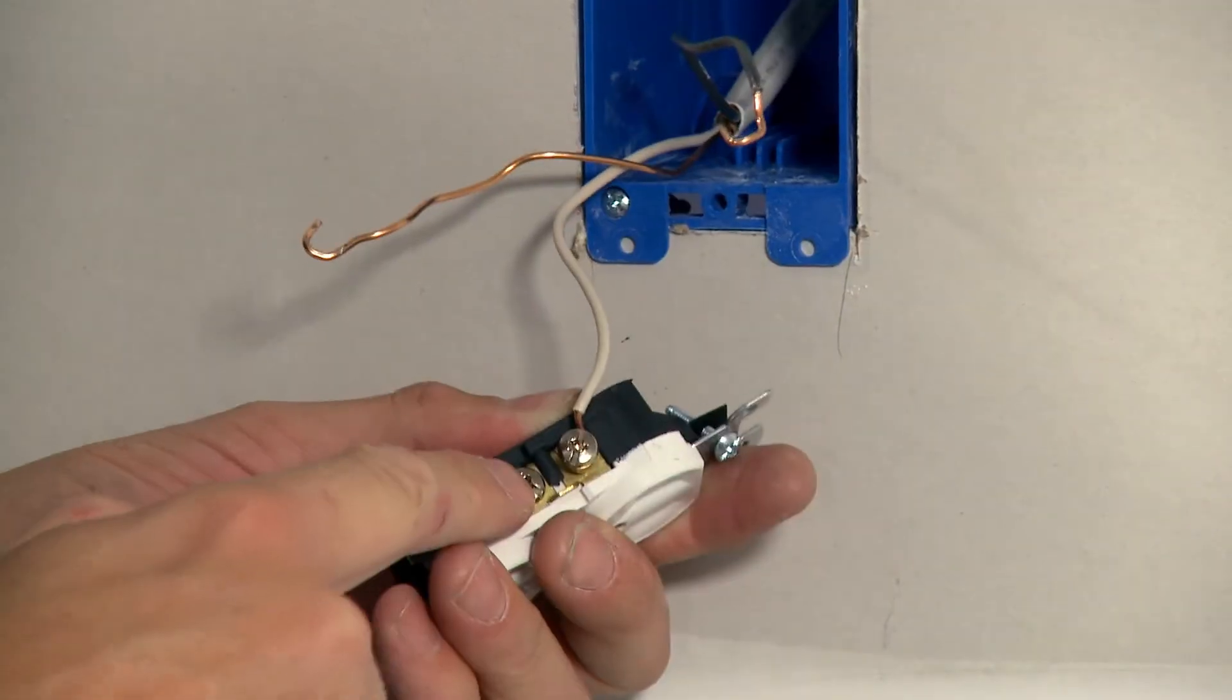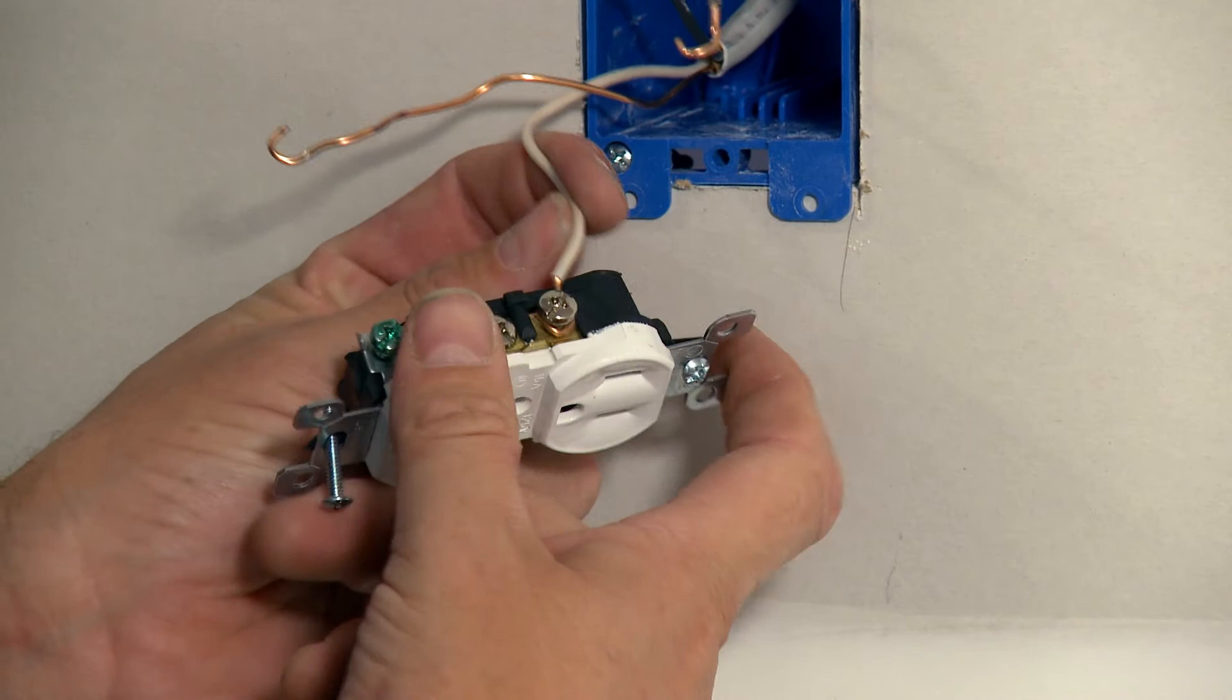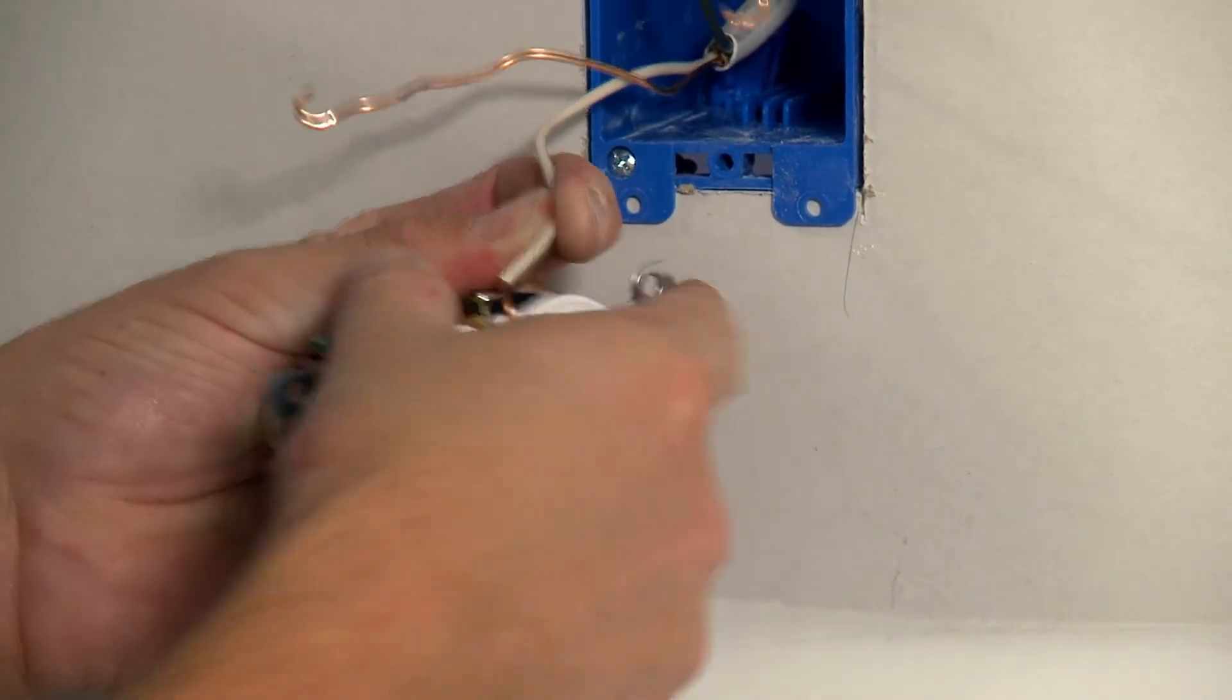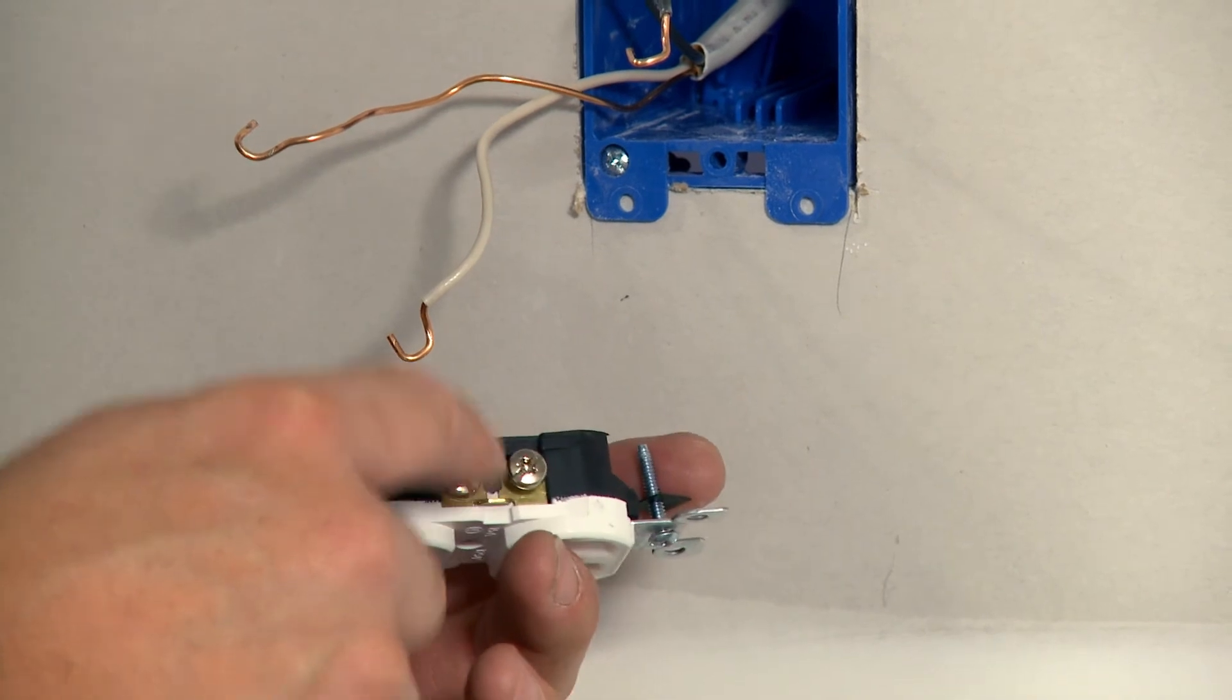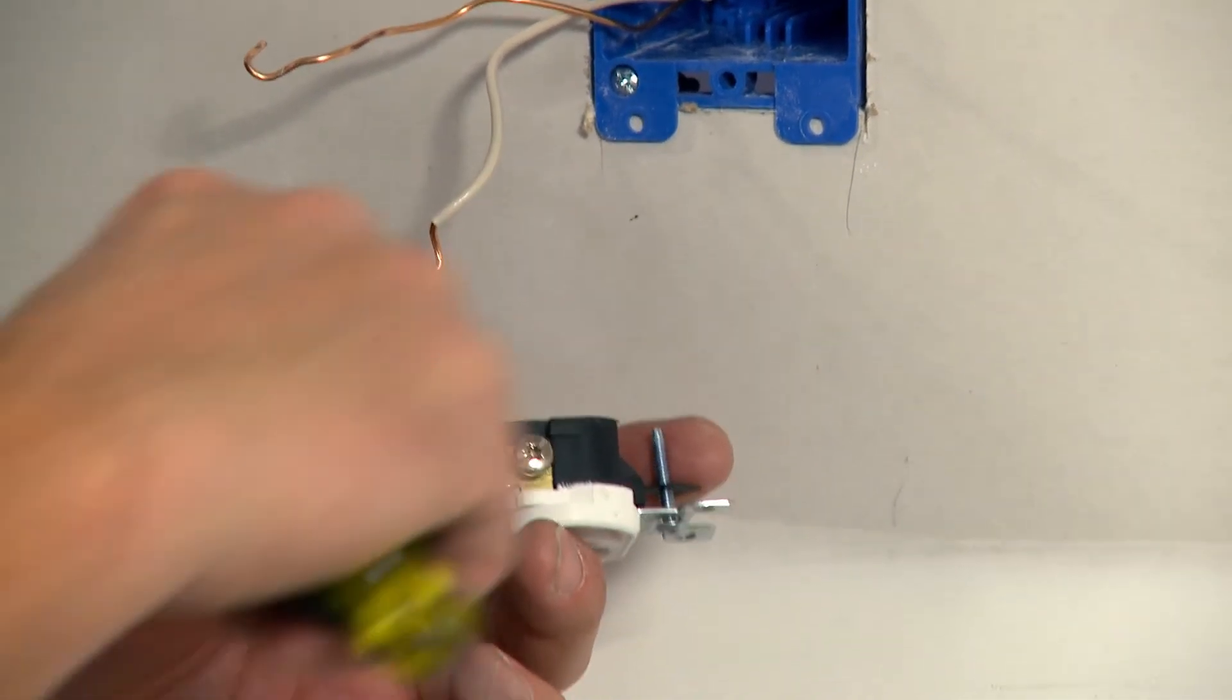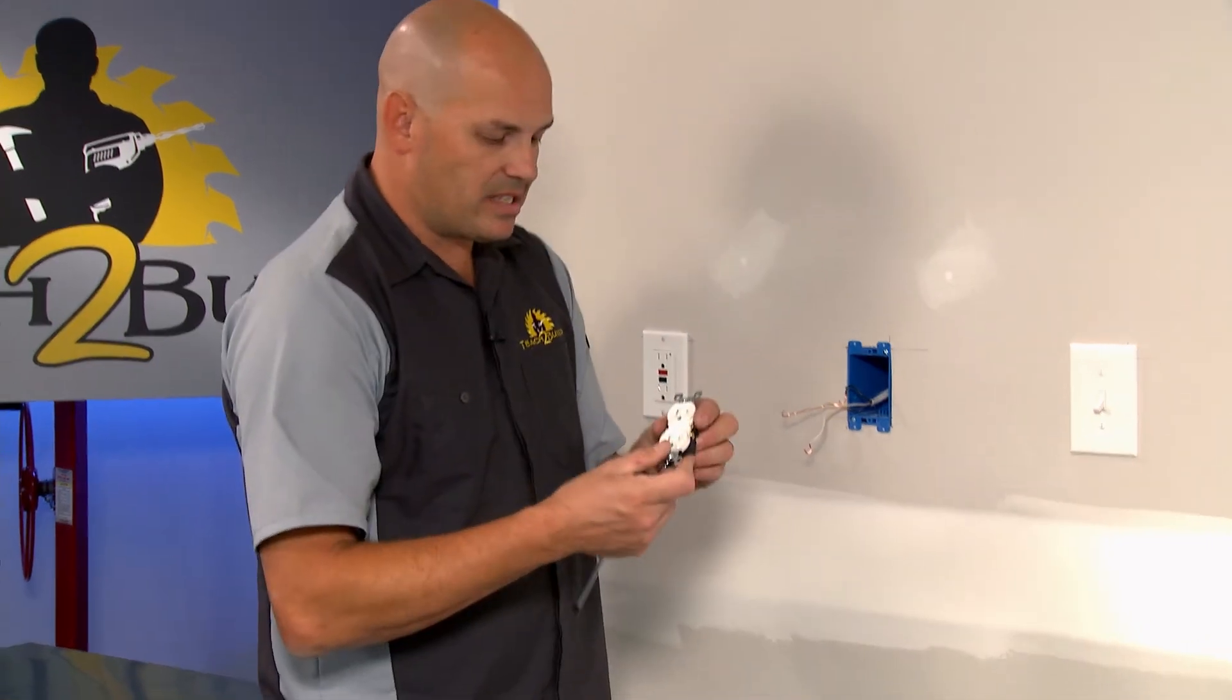Now, you'll notice these were installed properly. The wire wraps clockwise around that. That way, as the screw tightens, it actually grabs a hold of the wire and helps hold it in place. If it was wrapped counterclockwise, as you turn the screw, it would try and push the wire back out that side.